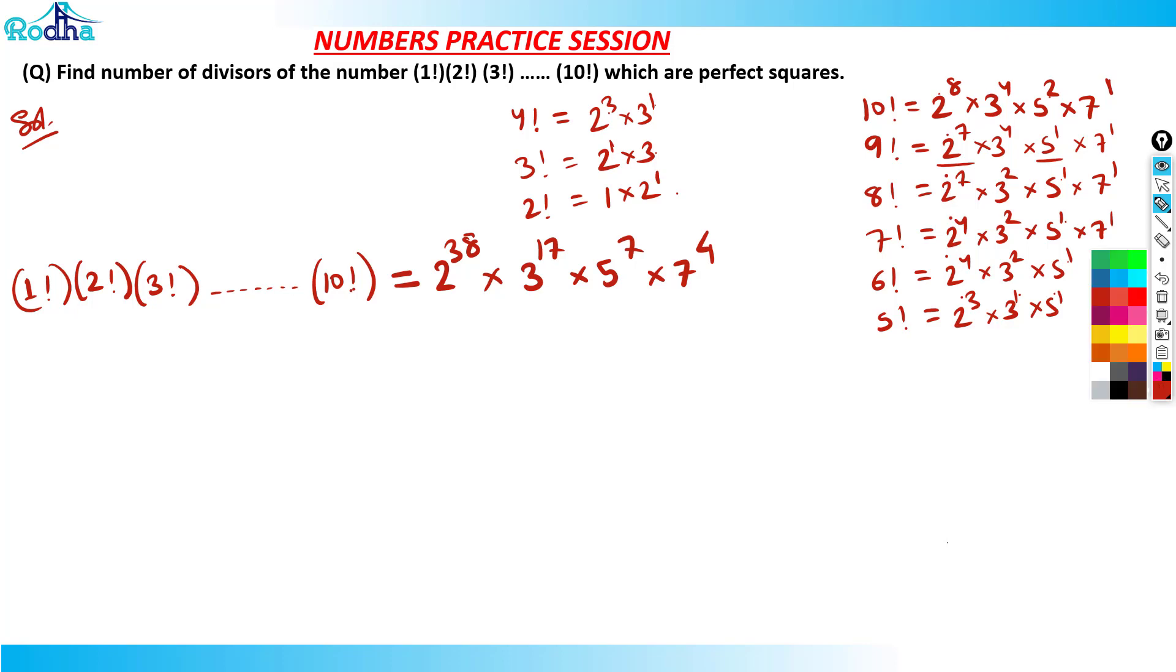It's just like you need to treat like a number square. Like N is equal to 2 raised to 38 into 3 raised to 17 into 5 raised to 7 into 7 raised to 4. Where this should be a perfect square. So which factors are perfect square? So we know that perfect square basically means what - any integer should have even power of the form 2k, such that if I do its square root, 2 will get cancelled and some integer value is left. That's the meaning of perfect square.